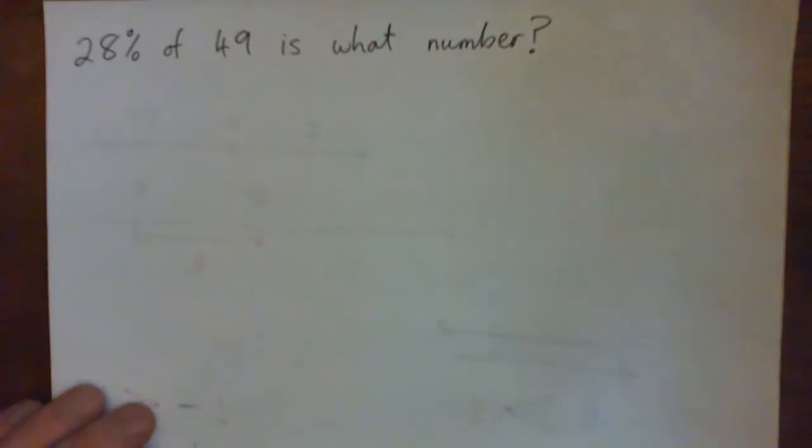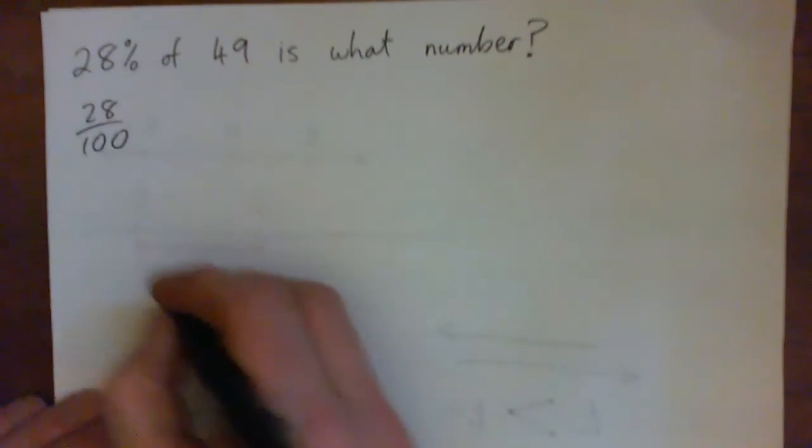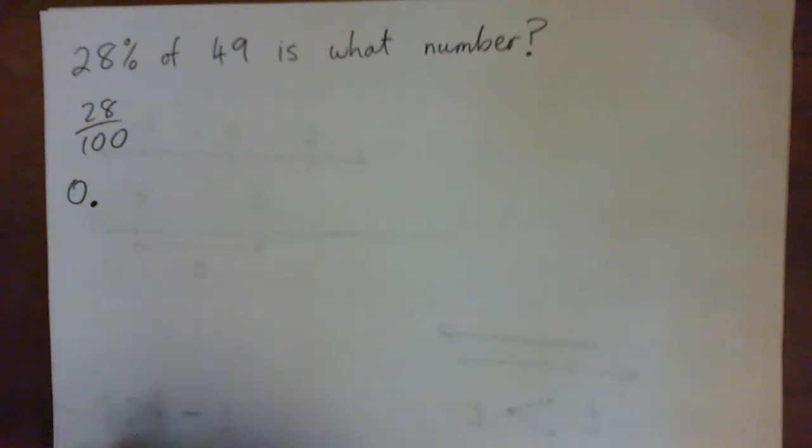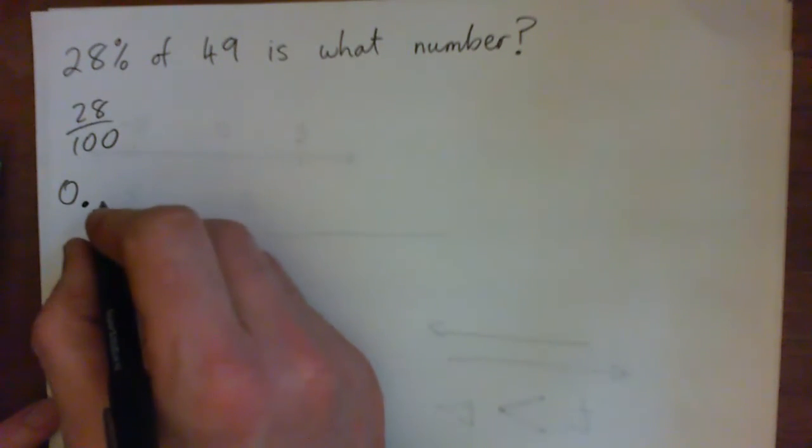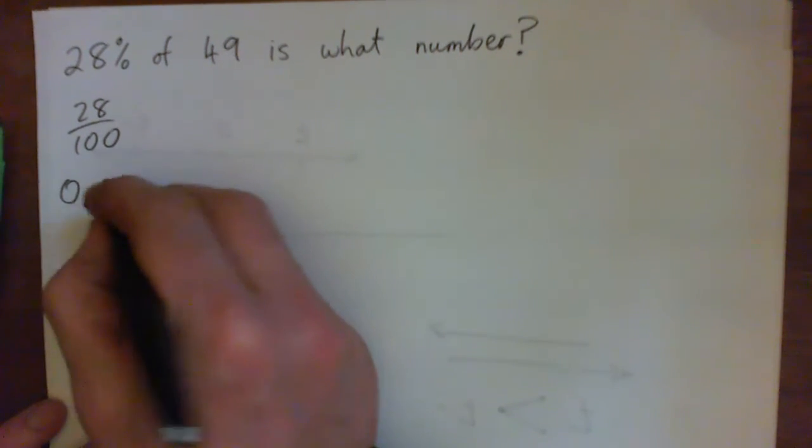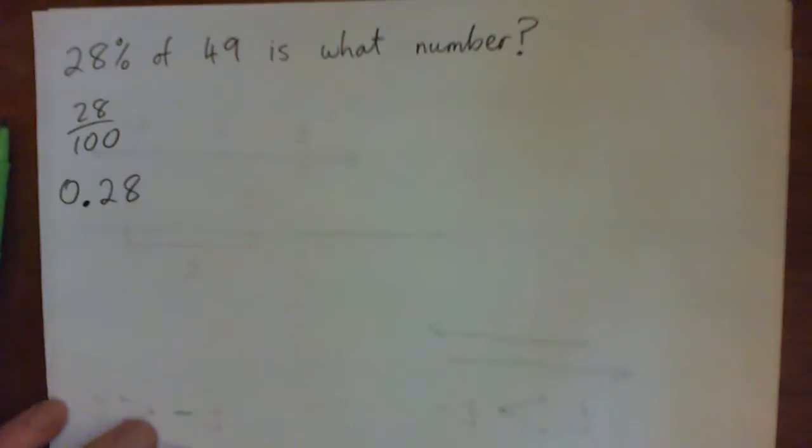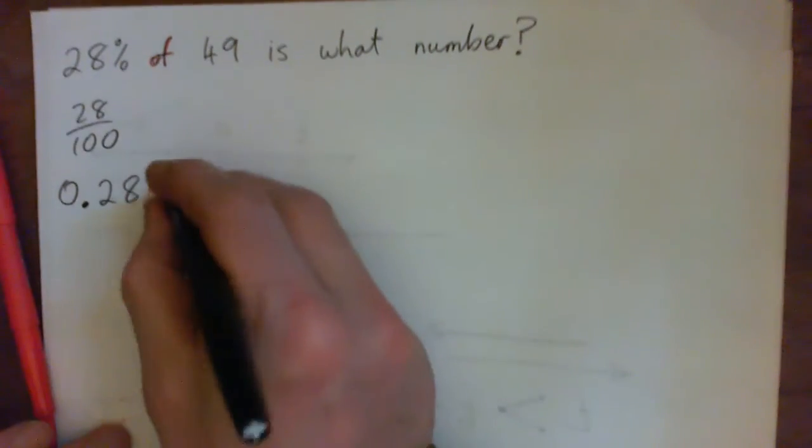So to solve 28% of 49, you just turn that to a decimal, that's 0.28, so it's like 28 cents, right? Yeah, no problem, so 0.28. Okay with that? Yeah. And then your of means multiply. Of times 49. So 49. Right.